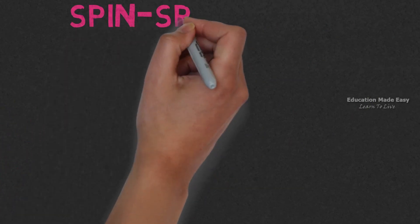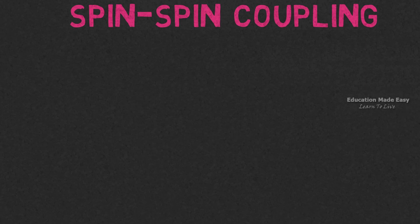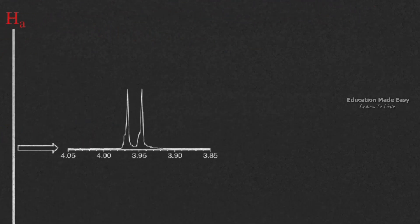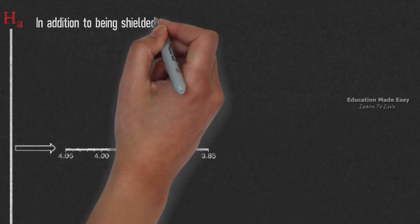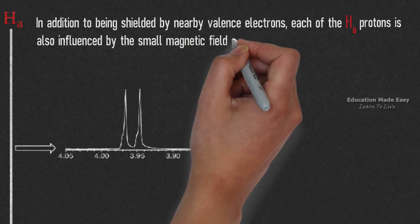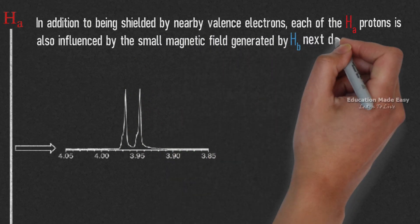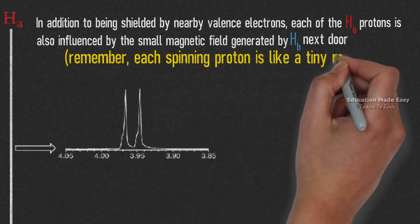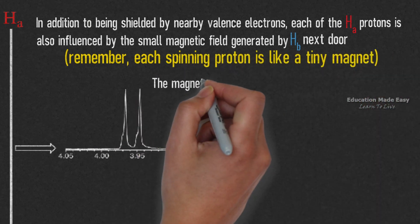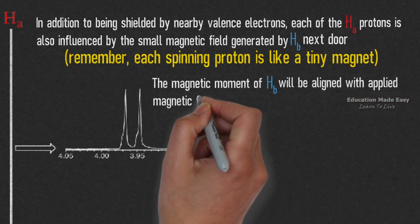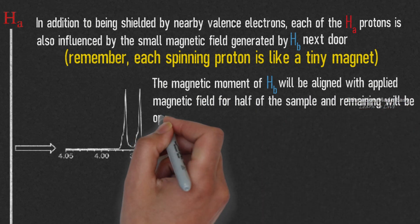Now let us discuss more about spin-spin coupling. For this, let us take the chemical shift diagram of 1,1,2-trichloroethane again. Here in the Ha signal, in addition to being shielded by nearby valence electrons, each of the Ha protons is also influenced by the small magnetic field generated by Hb next door. We must remember that each spinning proton is like a tiny magnet.